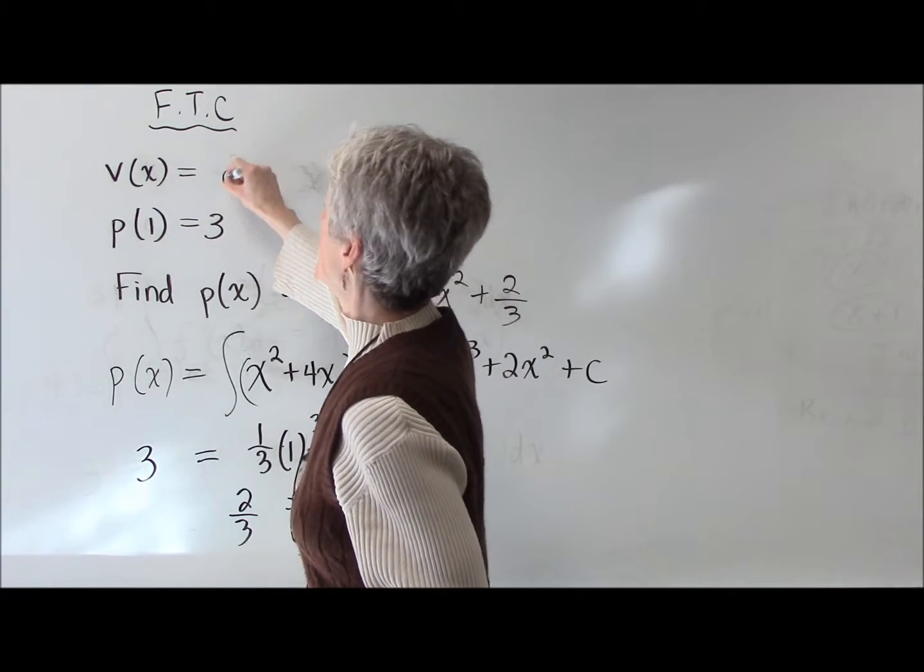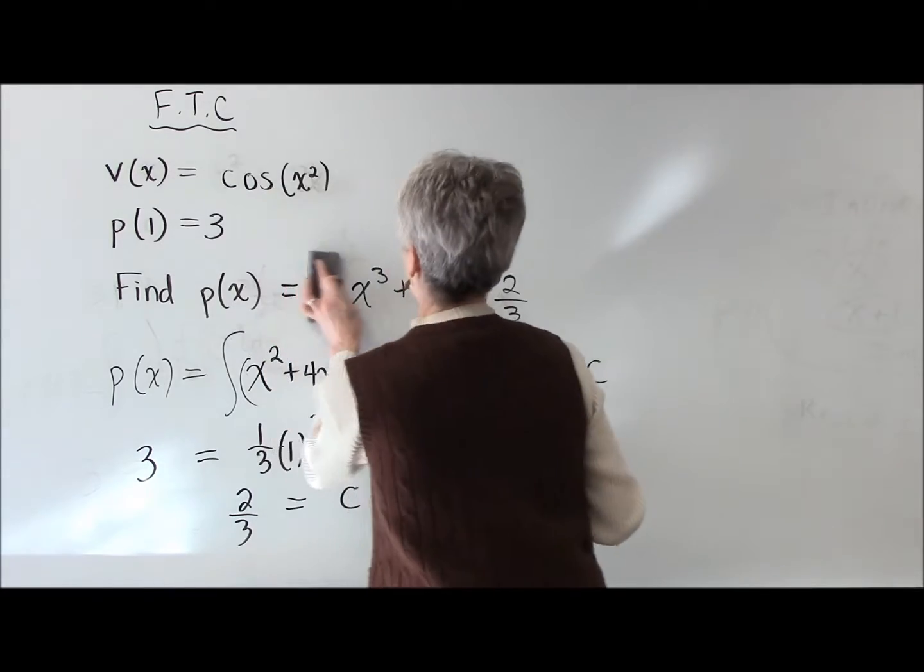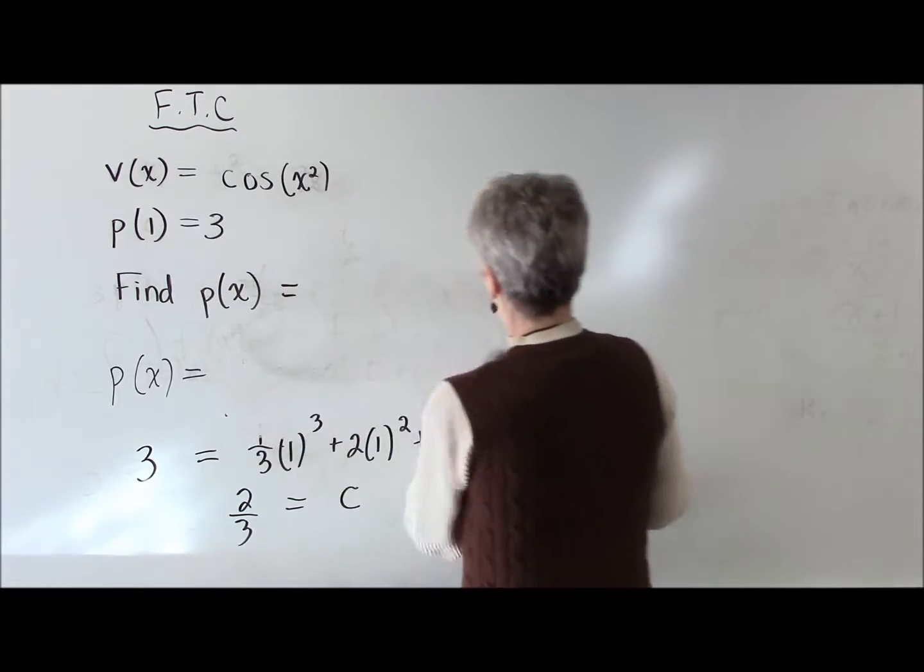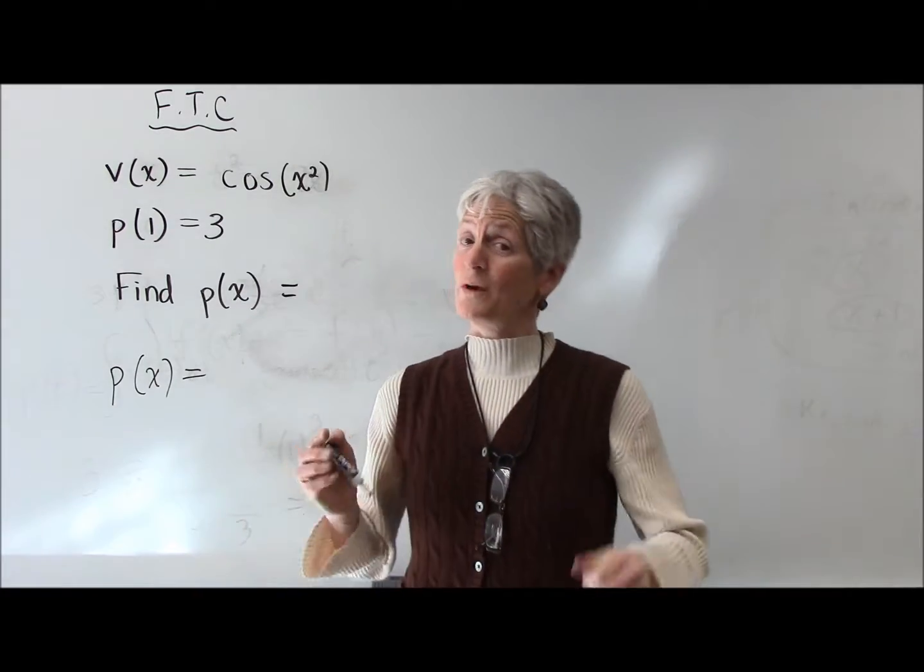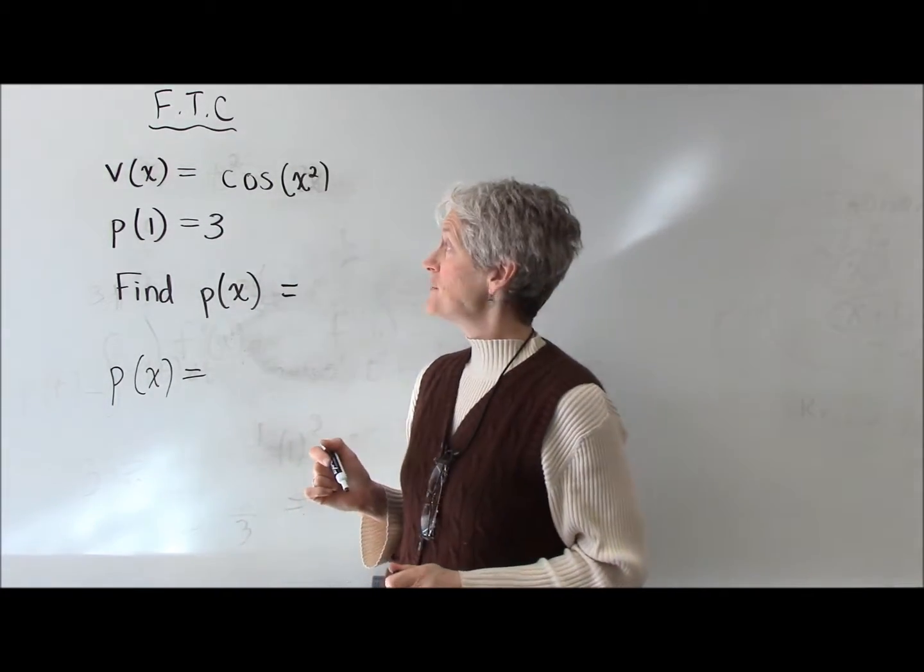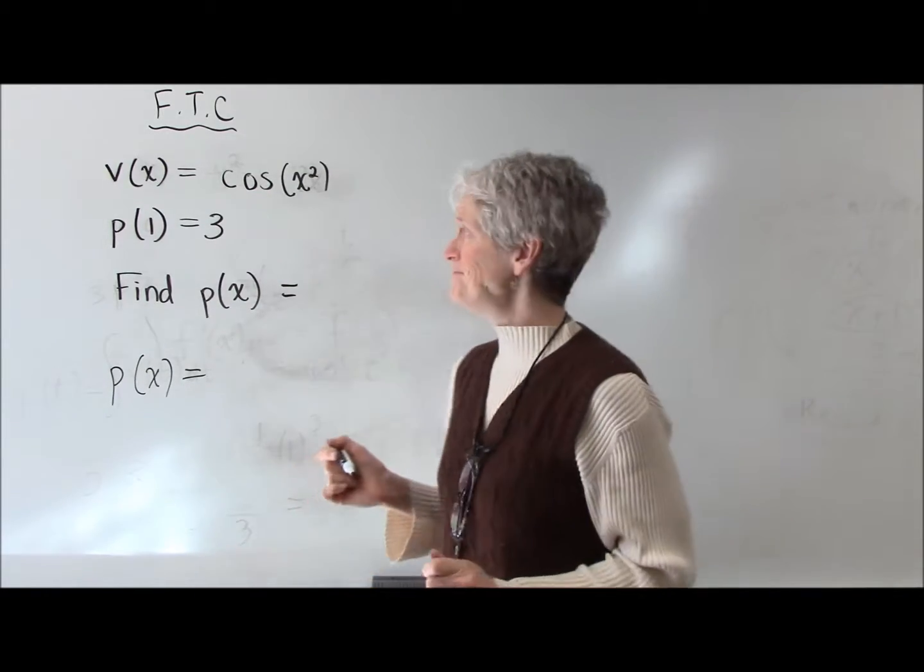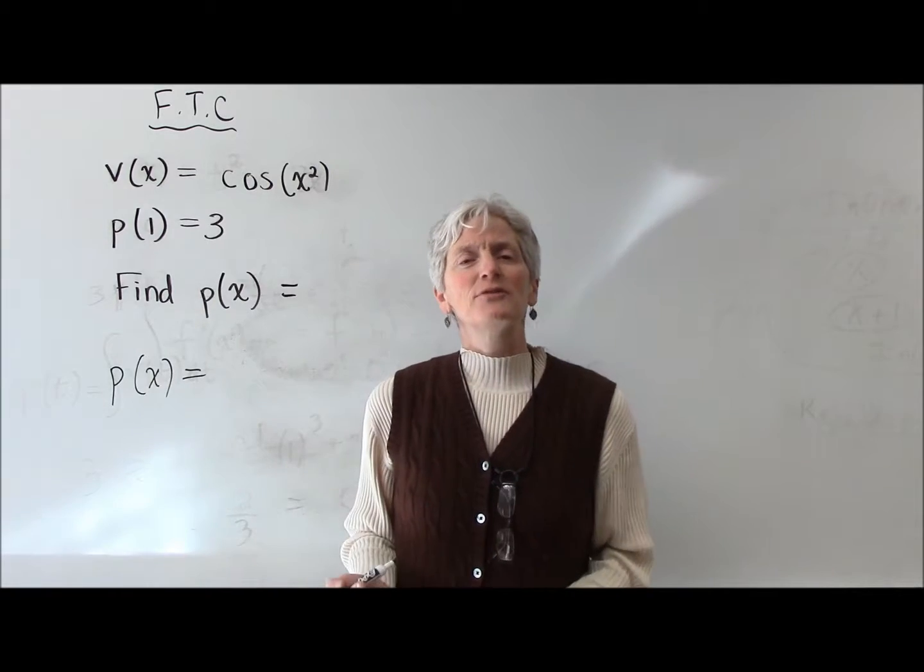For example, if my velocity were the cosine of x squared, right? Well, we don't know how to find that antiderivative of the cosine of x squared. You know, go ahead and give it a whirl, but I don't think you're going to be successful, right?